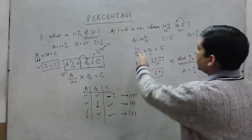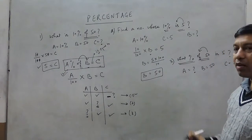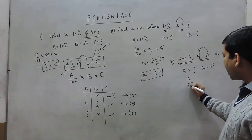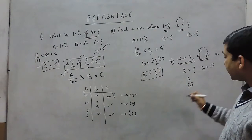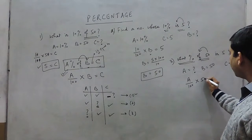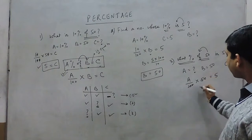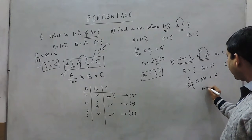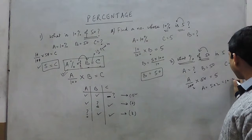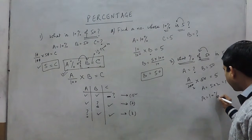In the third question we find A. We write A upon 100 multiplied by B, which is 50, equals 5. Calculating, A equals 5 into 2, which is 10%. So the value of A comes out to be 10%.